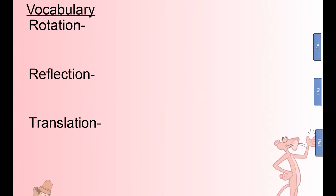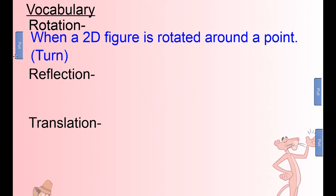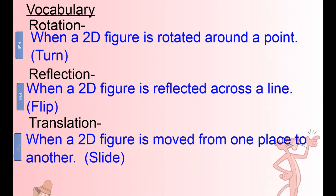So we've got three vocab words: rotation, reflection, and translation. A rotation is when a two-dimensional figure is rotated about a point — turned. A reflection is when a two-dimensional figure is flipped across a line — it's like the mirror image. And a translation is when a two-dimensional figure is moved from one place to another, sometimes called a slide.